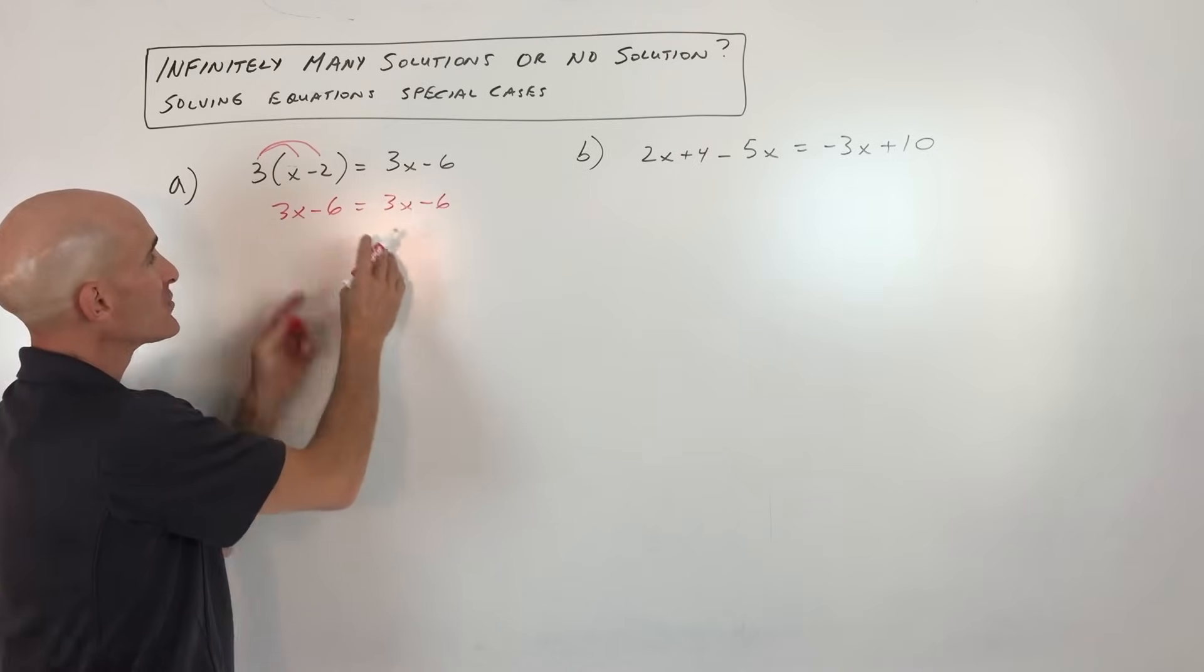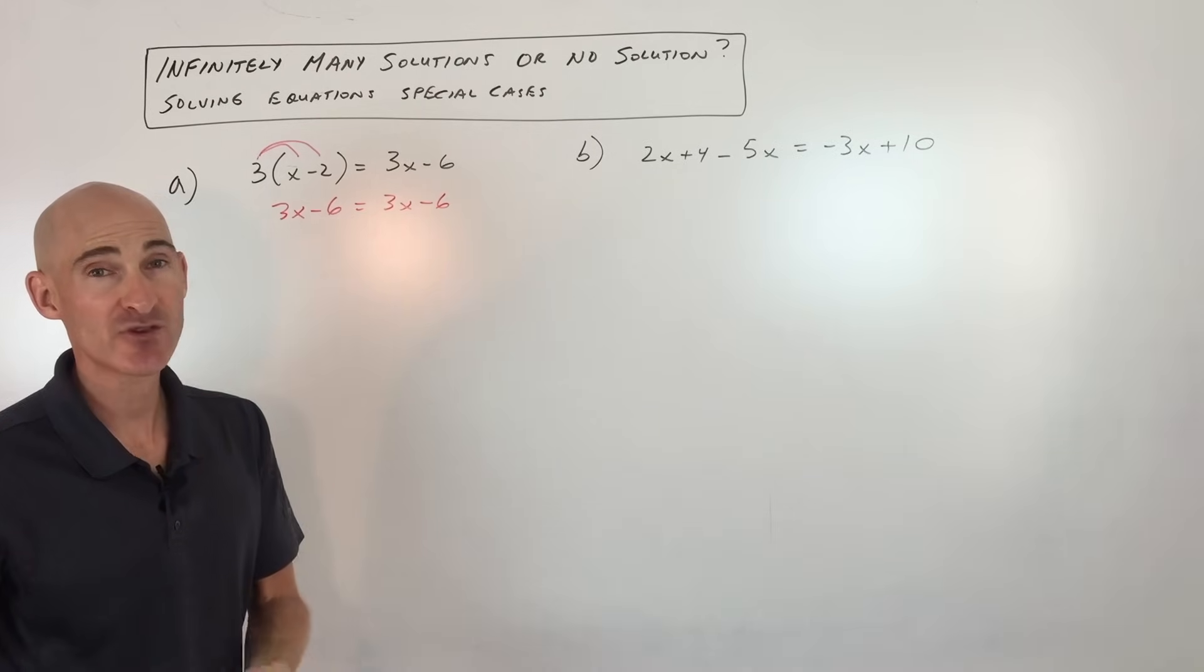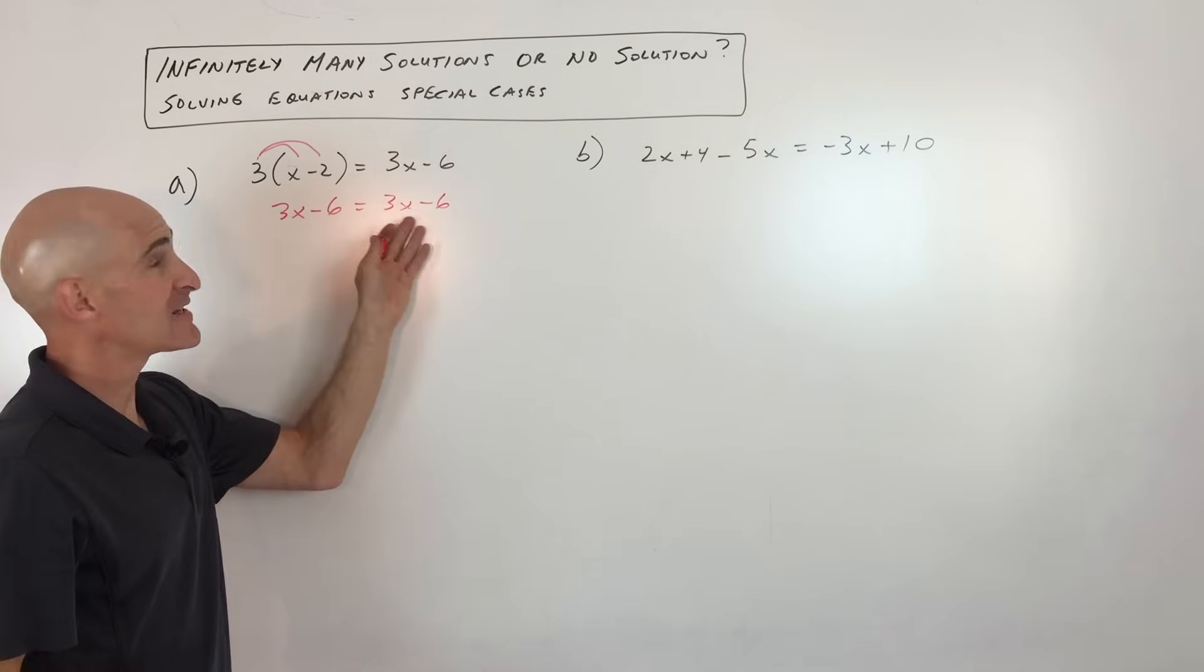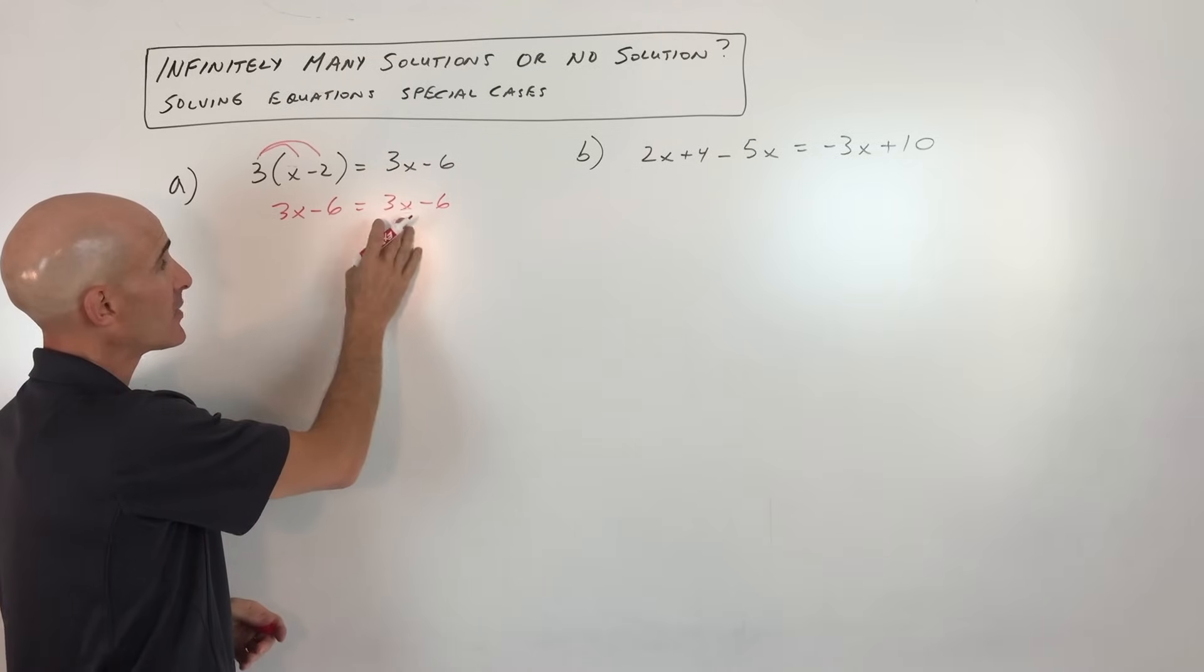Now, when you look here, you'll say wait a second, the left side and the right side, they're identical, right? They're exactly the same. So they call this an identity. What that means is the left and right sides are exactly the same, like identical twins.